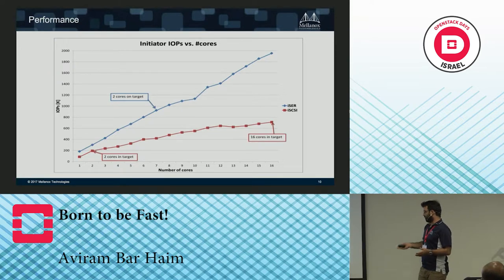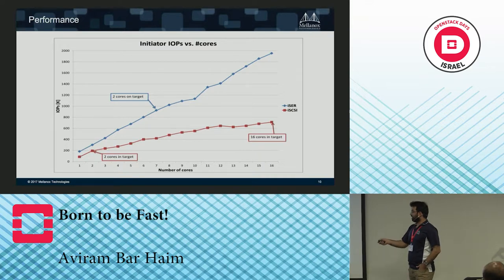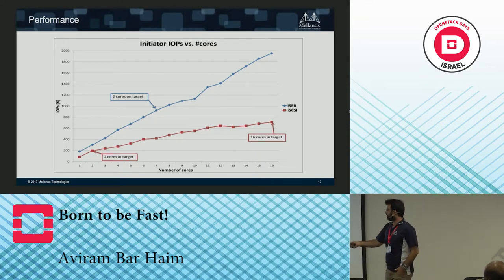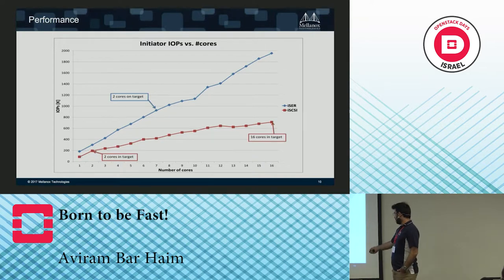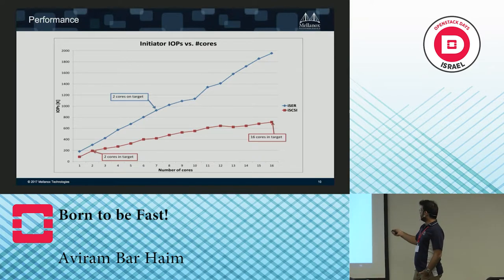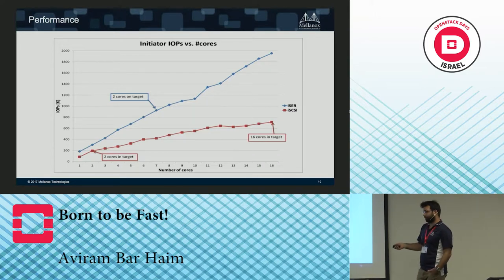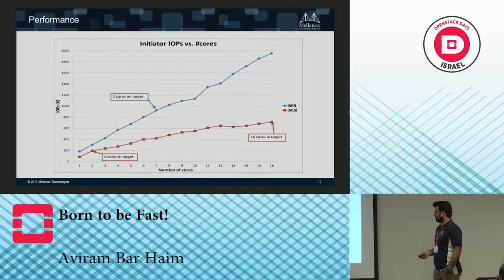Here is some iSER performance data showing IOPS versus number of cores on the initiator side. With 16 cores, CPU load bounds the iSCSI performance to 800k IOPS. But with iSER, because we bypass the kernel and don't involve the CPU, we can get almost 2000k IOPS — which is much more.